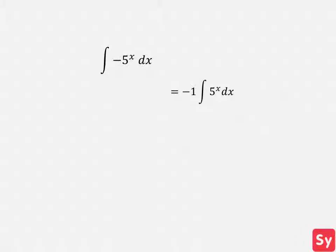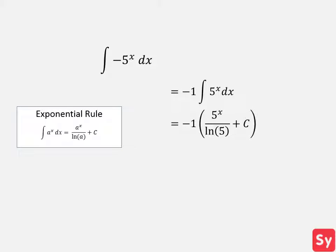Next we'll use the exponential rule. 5 is our constant. So we'll substitute 5 in for a and we'll get negative 1 times 5 to the x over ln of 5 plus c. We'll simplify this to negative 5 to the x over ln of 5 plus c.